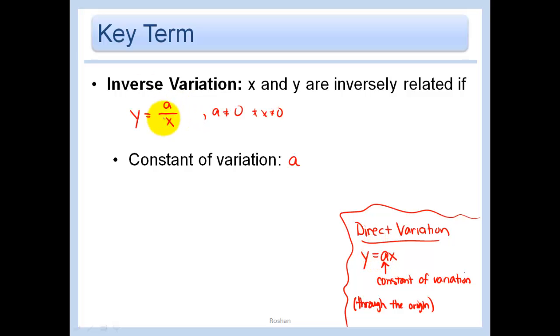Our constant of variation is still just that A, like we had before. So now you can just note, as X gets to be a bigger and bigger number, that Y would be smaller. And as X gets smaller, that Y would be bigger. So that's why we call it inverse variation.